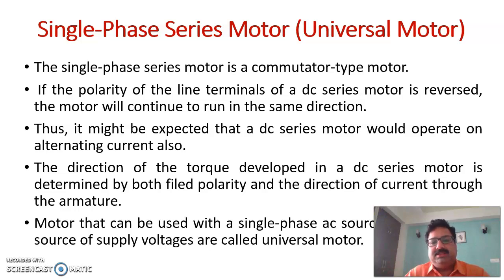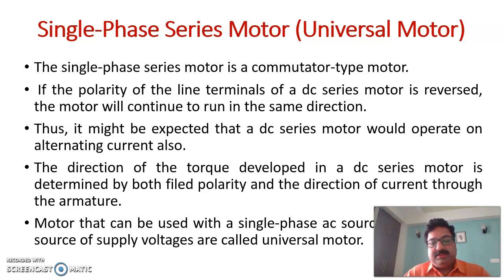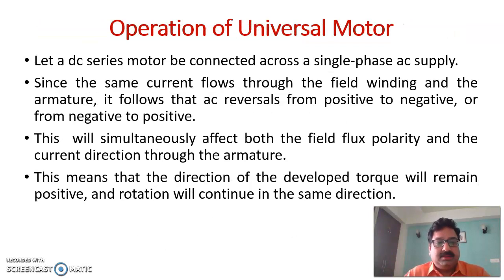It is also expected that a DC series motor would operate on alternating current. This machine operates on both AC as well as DC. The direction of the torque developed in a DC series motor is determined by the polarity and the direction of the current through the armature winding. This motor can be utilized on AC as well as DC, and that is why it is known as the universal motor — because it can operate on AC as well as DC.